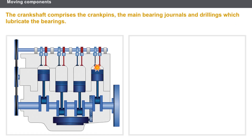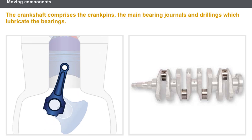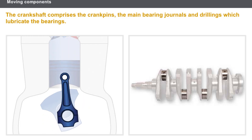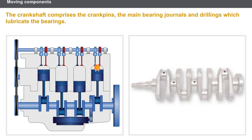The crankshaft transmits the mechanical energy to the valve timing and to the transmission. It is a shaft made of cast iron or forged steel which rotates inside the bearings fixed to the lower section of the cylinder block. The crank pins link the bearings to the crankshaft and are subjected to special mechanical treatment to prolong their lifespan. The main bearing journals act as a guide during rotation, and the shaft supported by them makes up the line of the crankshaft. The main bearing journals are also subjected to mechanical treatment, and drillings lubricate the crank pin bearings and the main bearing journals.